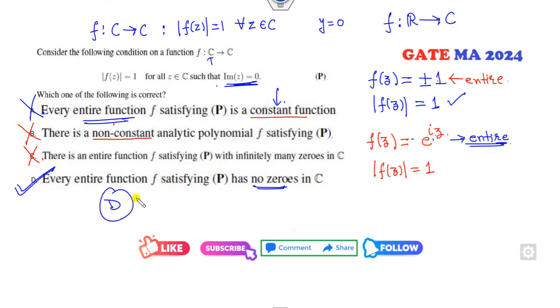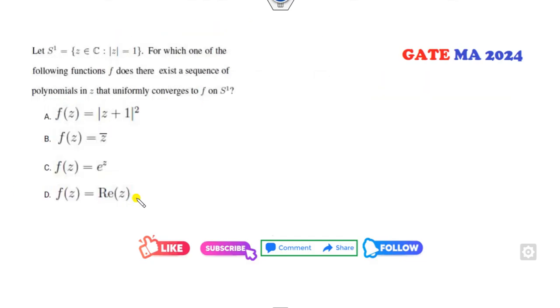Look at this next one. Capital S is the set which is defined like this. Then which one of them—it's an MCQ with only one correct option.